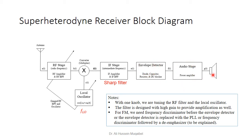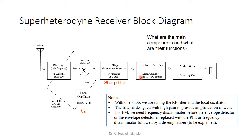Once the signal is in baseband, an audio amplifier is used before feeding it to the speaker. For an FM receiver, the envelope detector may be replaced or preceded by a discriminator, or a phase-locked loop — any suitable FM demodulation technique can be applied.